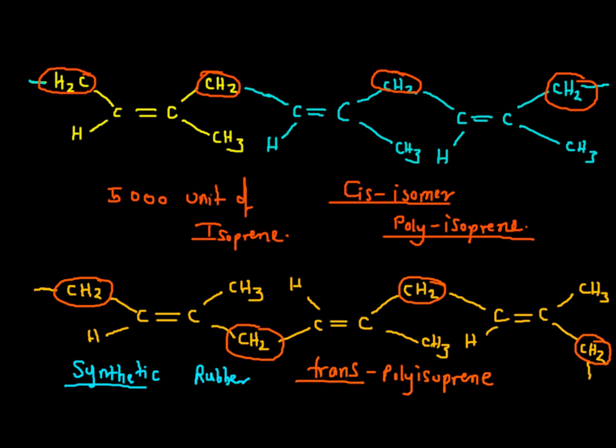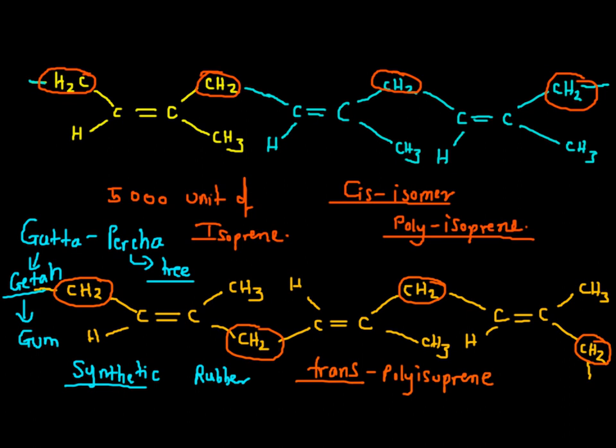In India, it is also called as Gatta Parcha. So the word Gatta is derived from Gatta which means gum, and Parcha means tree. So this is all about the cis and trans isomer.